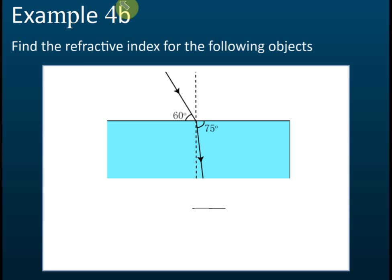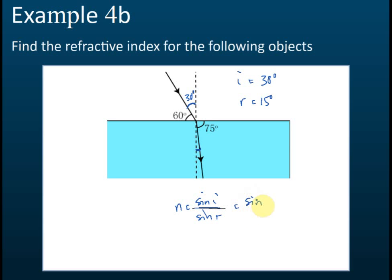Example 4b: Find the refractive index. The angle of incidence i must be measured from the normal, so i = 30°. The angle of refraction r = 15°. Therefore n = sine i over sine r = sine 30° divided by sine 15°. Using a calculator: 1.93. Note that the refractive index has no unit — do not give units.